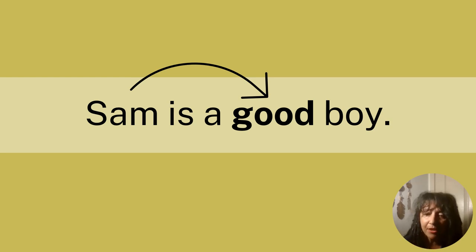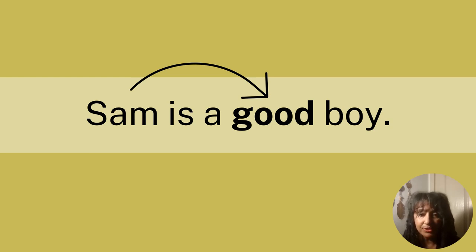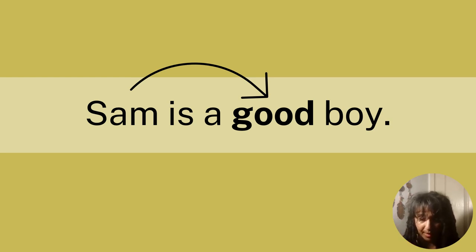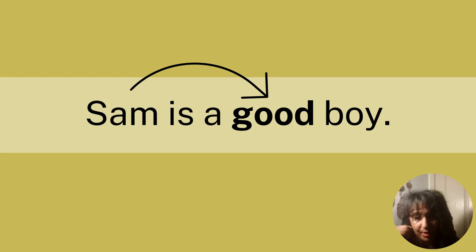Now, what word would be our adjective? Yes — the arrow is pointing to the word good. Good is used to describe the boy, and ultimately the boy that we're talking about is Sam. So Sam is a good boy.